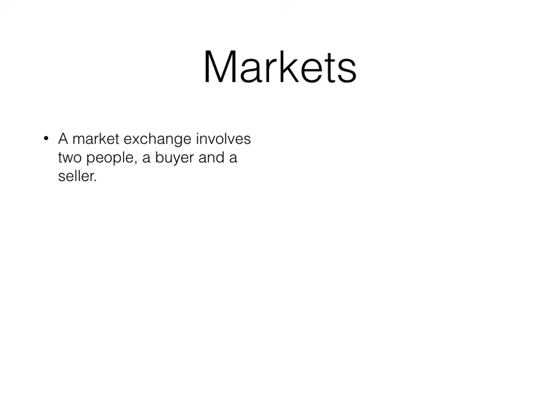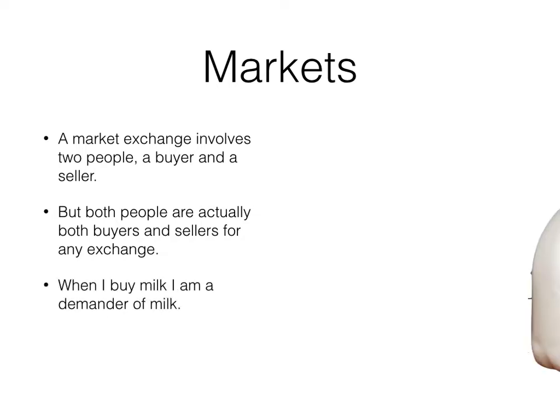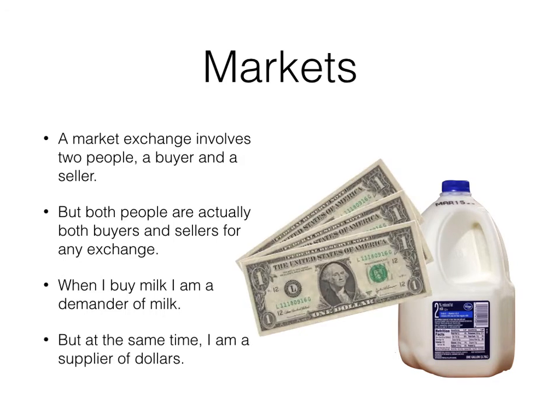Usually when we think of a market, we think of a buyer and seller, and we think of a demander and a supplier. However, every exchange really includes two people who are both demanders and suppliers of some good or service. For example, when I go to buy a gallon of milk, I am a demander of milk, but at that same time, I'm also a supplier of dollars.